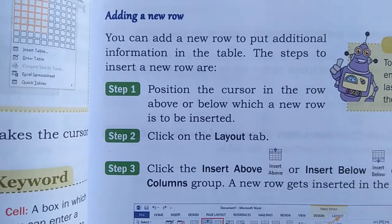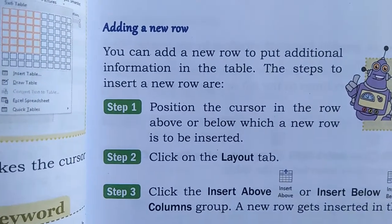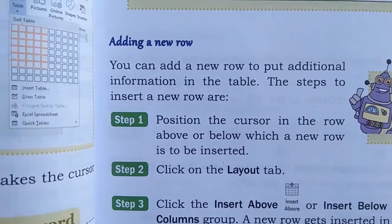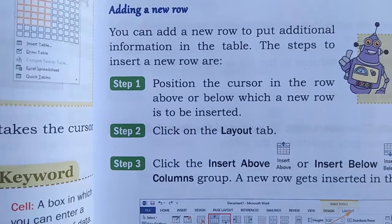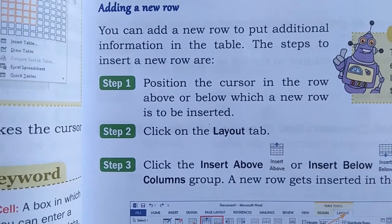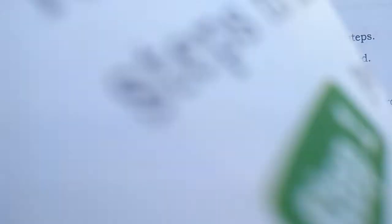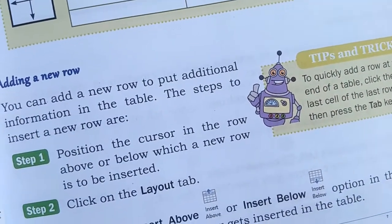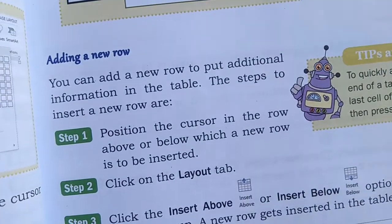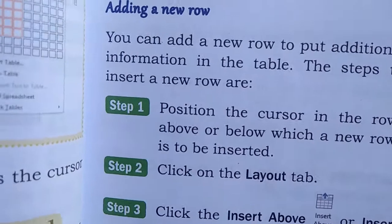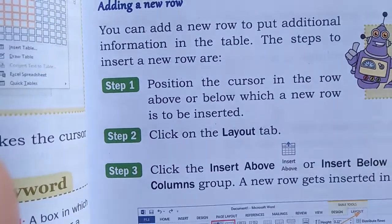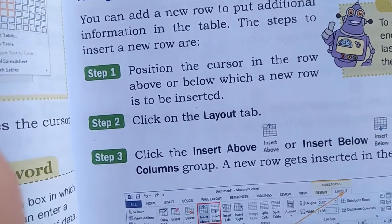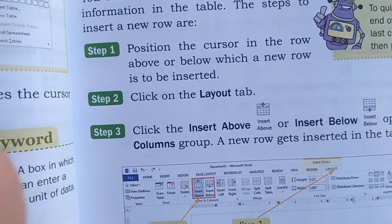Now we have the first step where a new row is to be inserted. Second, click on the Layout tab. Third, click on the Insert Above and Insert Below option in the Rows and Columns group.